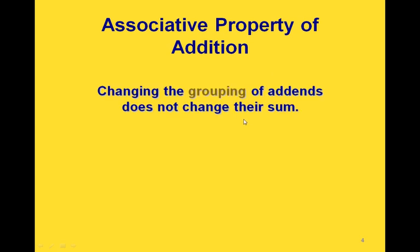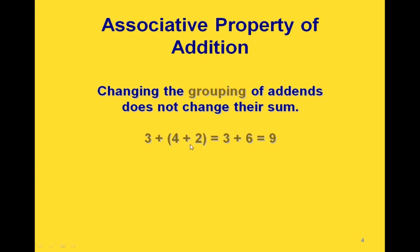Next is the associative property of addition. This says that changing the grouping of things that we're adding doesn't change their sum. So for example, if we're adding three numbers together, we could group the last two together with parentheses. That says we need to add the 4 and the 2 first, and then add that result to the 3. So 4 plus 2 is 6, and then we add the 3 and the 6 to get 9.